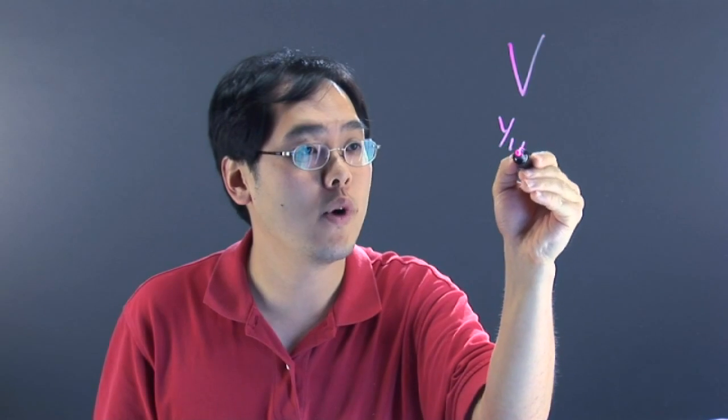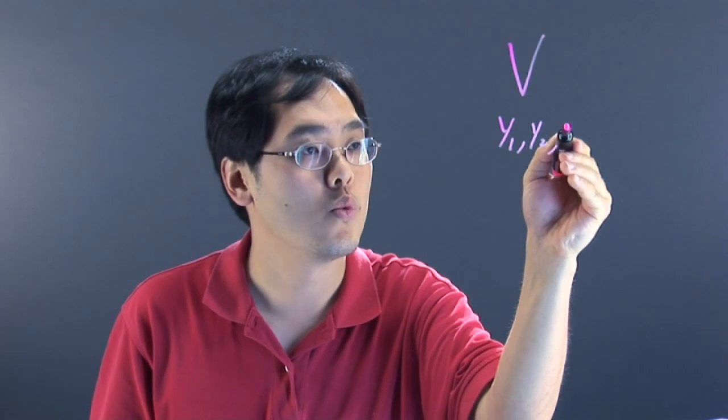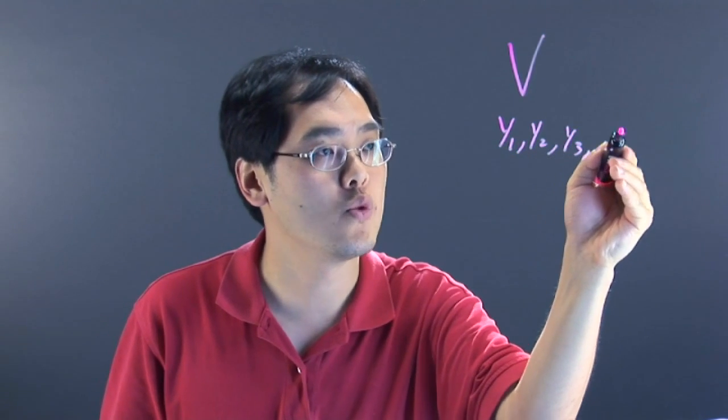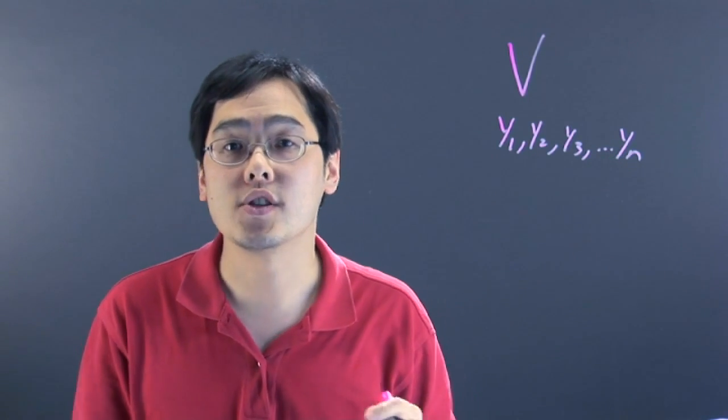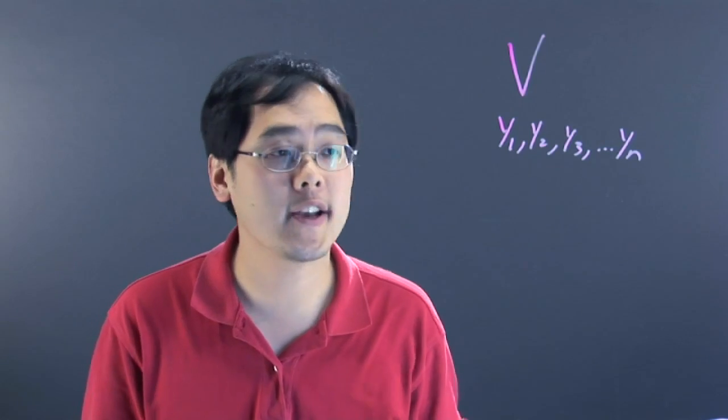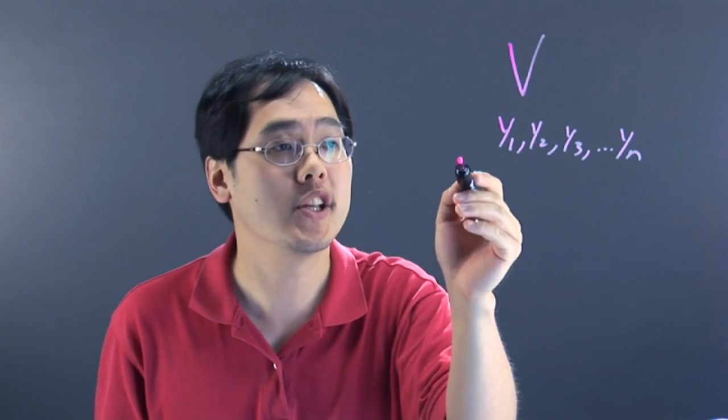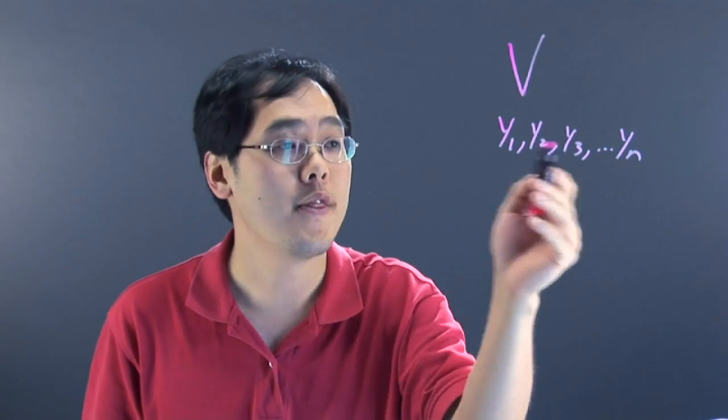If you have a set Y1, Y2, Y3, all the way down to Yn, there's a principle that says this set of Y's is known to be a spanning set if every vector in V can be written as a linear combination of the Y's.